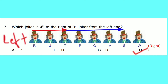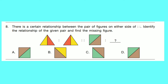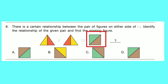Question number 8: There is a certain relationship between the pair of figures on either side of the divider. Identify the relationship and find the missing figure. There are two triangles on the left side, each divided by 2, both halves colored differently. In the first triangle, left side is yellow but right side is red. This color is exchanged in the second triangle — left side is red, right side is yellow. In this square, we have to find the same relationship. Option A is correct.